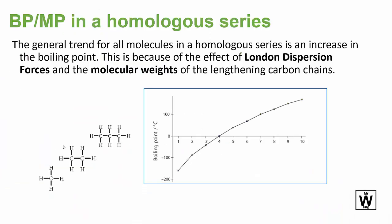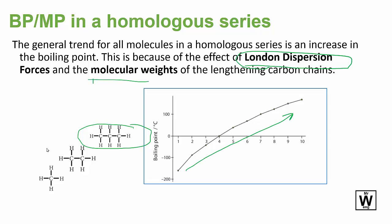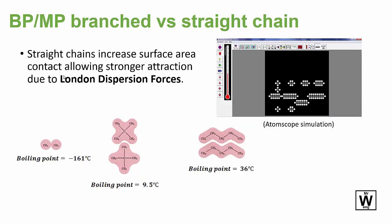Moving on to physical properties, the first is melting and boiling point. If you increase the carbon chain, you increase the molecular weight and increase the London dispersion forces. Try to be specific — use London dispersion, dipole-dipole, or hydrogen bonding rather than just 'intermolecular forces.' This is why increasing the homologous series generally increases melting and boiling point: a longer carbon chain increases molecular weight and London dispersion forces.